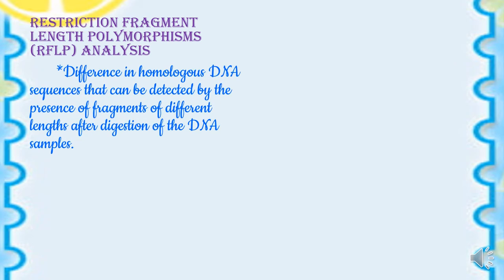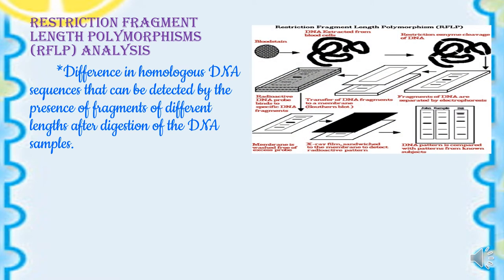Restriction Fragment Length Polymorphism (RFLP) analysis refers to the differences in homologous DNA sequences that can be detected by the presence of fragments of different lengths after digestion of the DNA samples. By comparing homologous DNA fragments of different lengths, we can find out the characteristic features. Here is the experiment performed to detect the presence of fragments of different lengths.